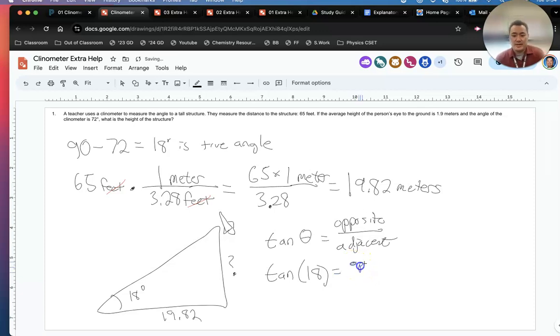We're trying to find the opposite side of the triangle, the height, right? This is the angle of the opposite side here. So adjacent is going to be 19.82. It's right there.